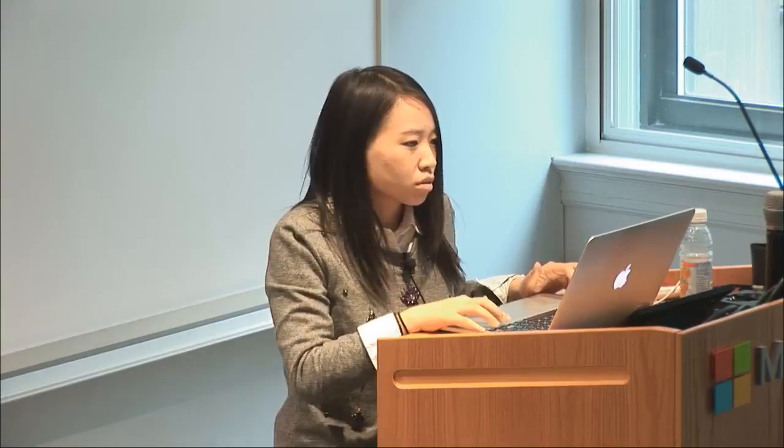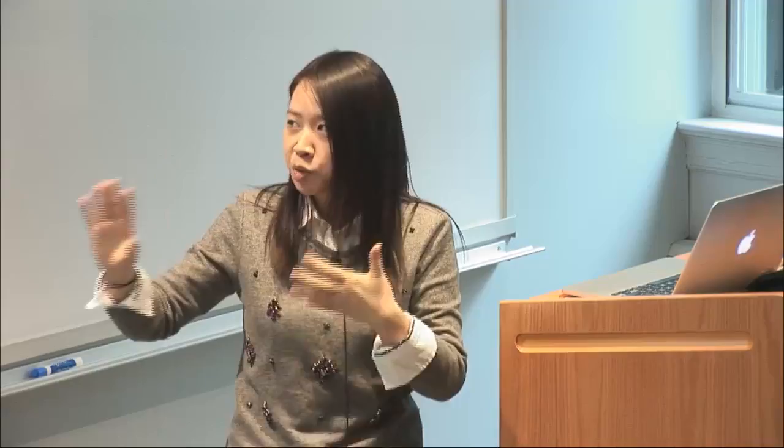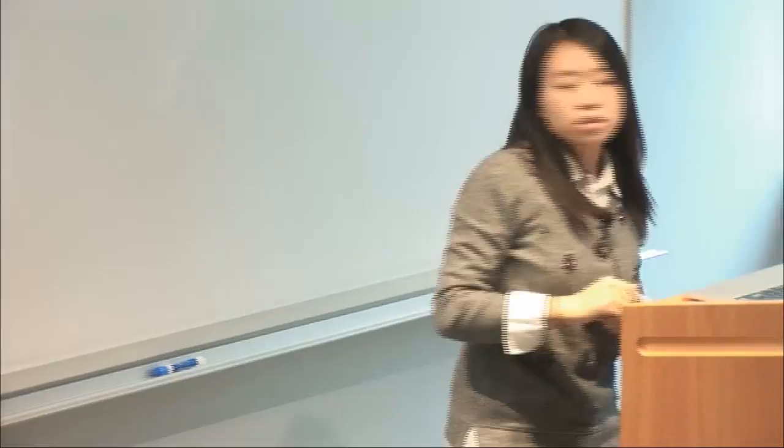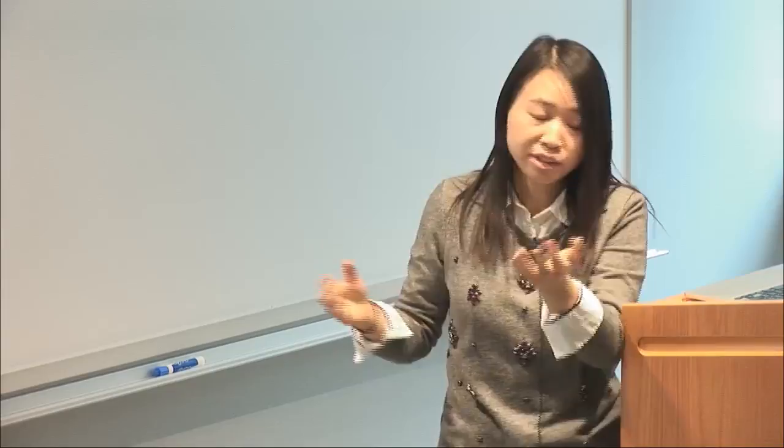It's more accurate to think of the labeled set as a portion of the pool of data — every time we put the most useful points into the label set. If we think of this as source and target — like in domain adaptation or transfer learning — we find two things: the input distribution is different between the labeled and unlabeled pool, but the conditional label distribution P(Y|X) is still the same between these two. After adding all the data into the label set, you'll still get the same as passive learning.